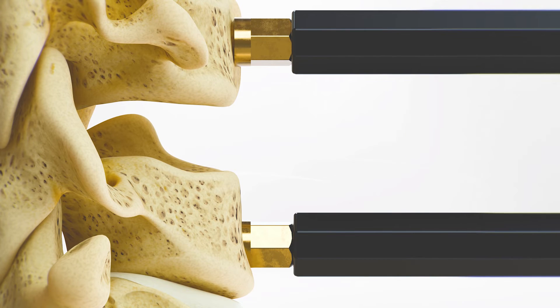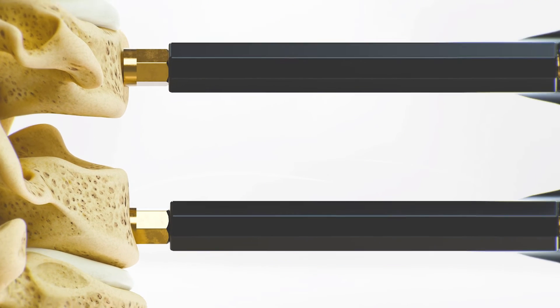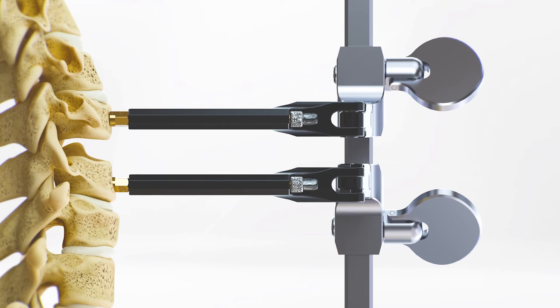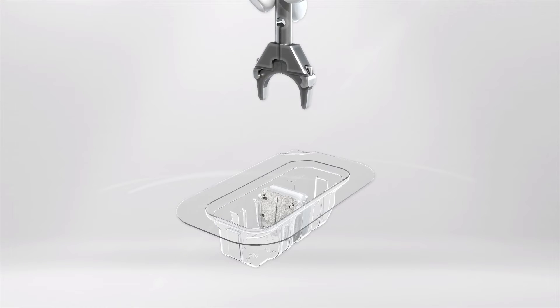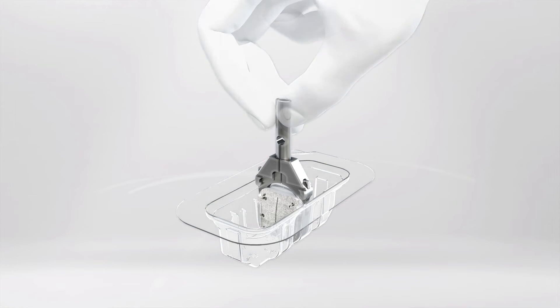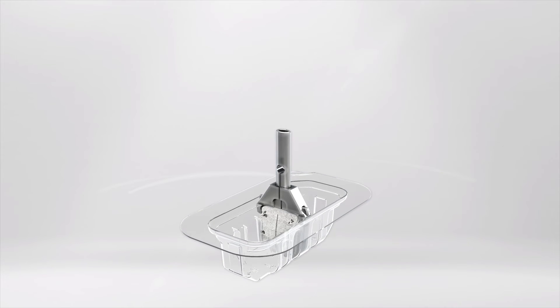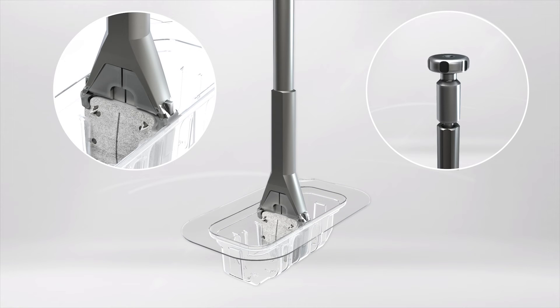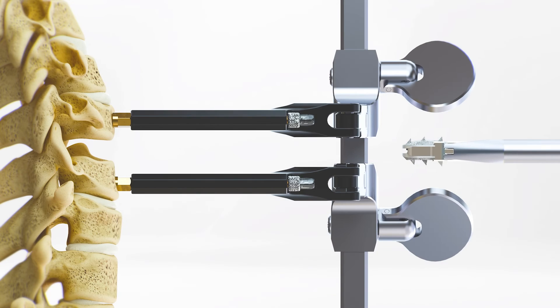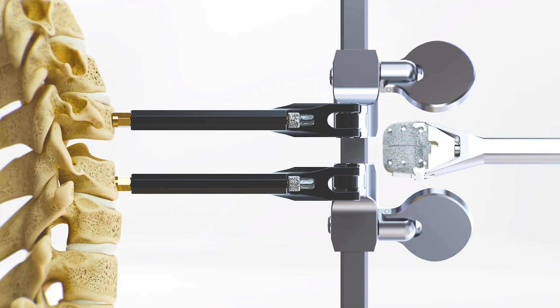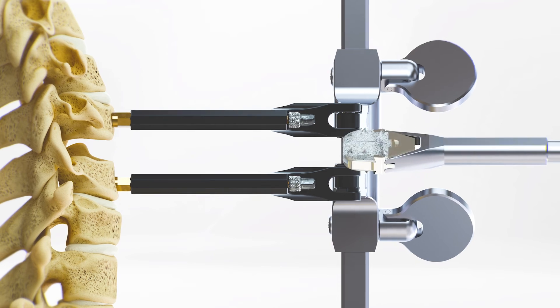The vertebral bodies are ready to be implanted with the ProDisc C Vivo implant. Attach the inserter tip to the implant in the packaging. Push down on the inserter tip to lock the inserter tip to the implant. Attach the inserter to the inserter tip and implant. Confirm implant orientation by ensuring the superior endplate indicator line is aligned cranially.